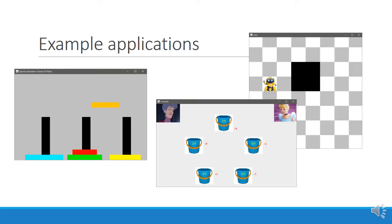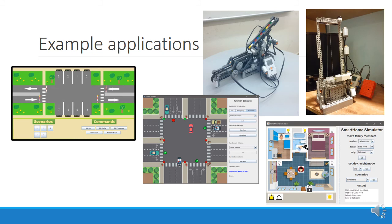Some examples of reactive applications developed by us and by our students using SPECTRA include classic puzzles like Towers of Hanoi, Moving Obstacle Evasion, and Cinderella and their Wicked Stepmother, as well as simple Lego robots — one that sorts bricks by color — an elevator, and various simulations for a smart home, a four-way junction, and parking lot operations.